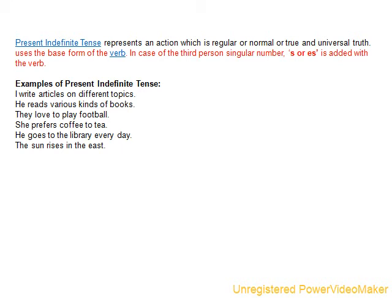Present indefinite tense represents an action which is regular, normal, or a universal truth. You can write 'true or universal truth.' What is universal truth? For example: the sun rises in the east.